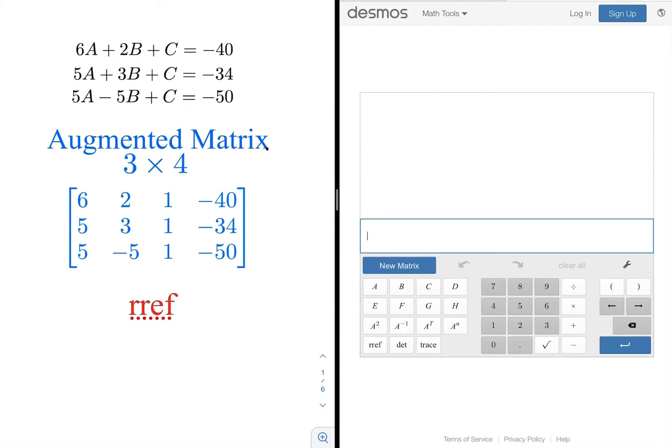You can see that I've already written it as an augmented 3 by 4 matrix where I've just used the coefficients of each variable and the constants on the right. And so what we're going to do is go into our Desmos calculator and tap new matrix or enter new matrix and let's make this a 3 row by 4 column matrix and then let's enter all of our values.